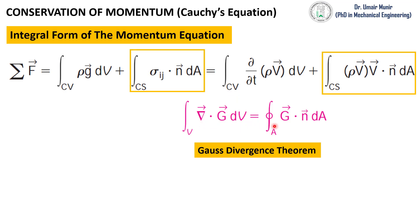At first we will convert this surface integral into a volume integral. When we compare these two surface integrals we can say that G is equal to sigma_ij, so we will replace G here with sigma_ij to have a volume integral in this form.